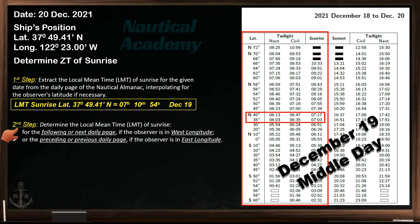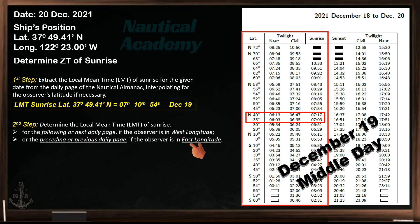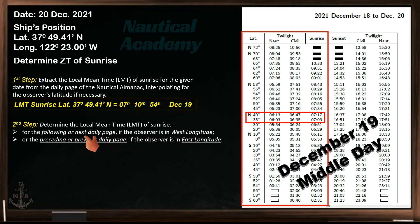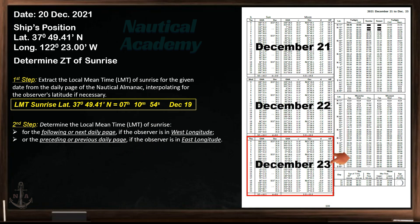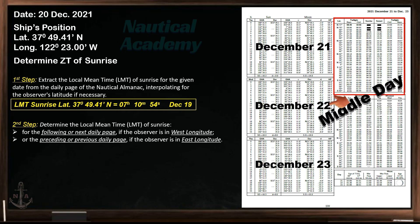Let's proceed to step 2. We need to determine the local mean time of sunrise for the following or next daily page if the observer is in west longitude, and the preceding or previous daily page of the Nautical Almanac if the observer is in east longitude. Since the ship's position is in west longitude, let's extract the time of sunrise on the next daily page, which covers December 21st, 22nd, and 23rd. The time of sunrise extracted from here will be on the middle day, which is December 22nd.